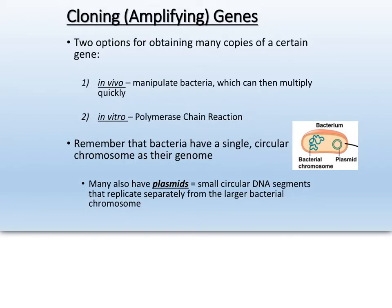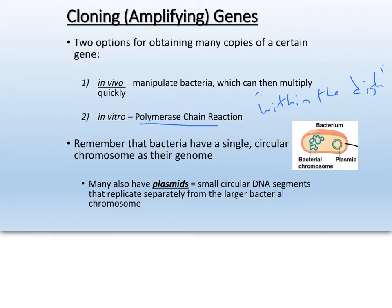We have two options for amplifying genes. One is a little cheaper and older, called in vivo cloning or in vivo amplification — in vivo meaning in the living — where we use bacteria to multiply our gene. The newer, more expensive way is an automated process called in vitro amplification, meaning within the dish, in a lab, without a living cell. This process is called PCR, or polymerase chain reaction. The AP curriculum is more concerned with you understanding the in vivo version.